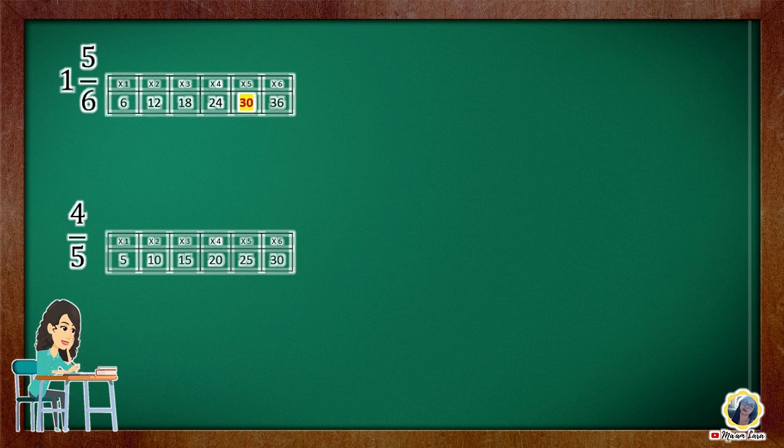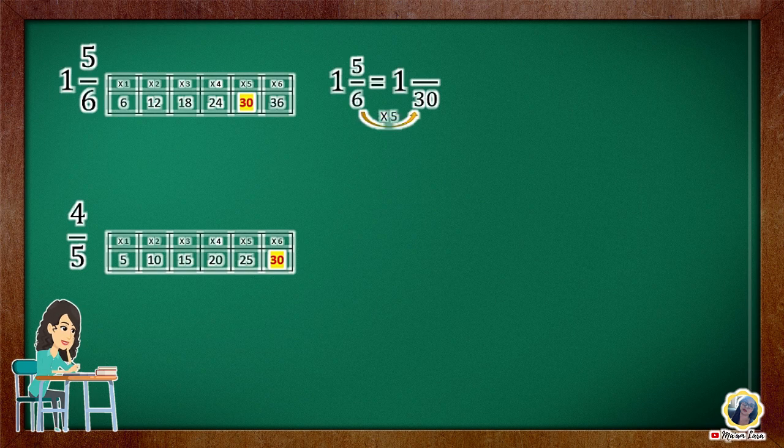First is to find the LCD. Next is to change the dissimilar fractions to similar fractions.